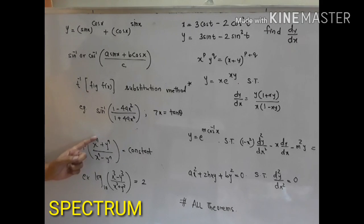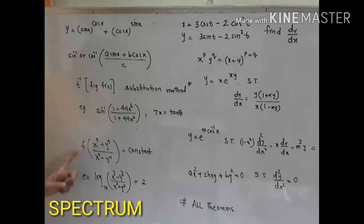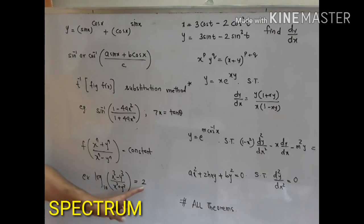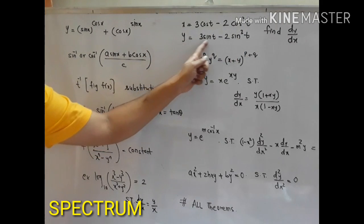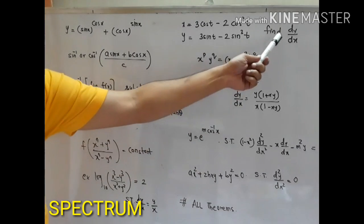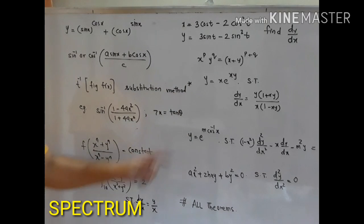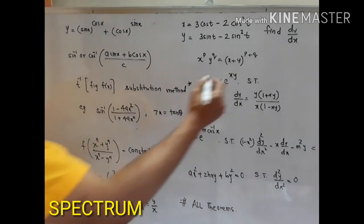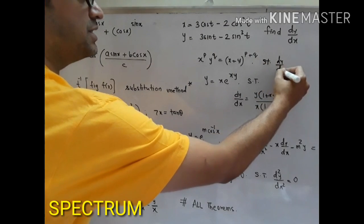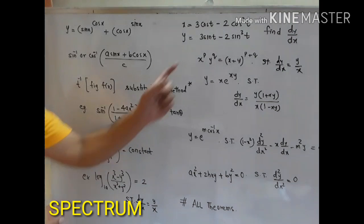There are implicit function problems where you have terms like x-power plus y-power over the conjugate equal to some constant, and they ask us to show that dy/dx equals y/x. Then we have parametric functions where x is a function of t and y is also some function of t and they ask us to find dy/dx. Another very important implicit function is x raised to p times y raised to q equal to (x plus y) raised to p plus q, and they ask us to show that dy/dx equals y/x.